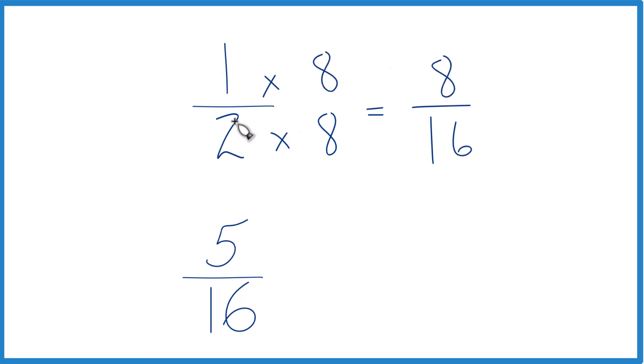And 8 sixteenths, that's the same value as 1 half. So now we have 8 sixteenths, 5 sixteenths, we don't really need to do anything because we already have 16 in the denominator. So we're going to compare the numerators. The denominators, they're the same when we compare the numerators.